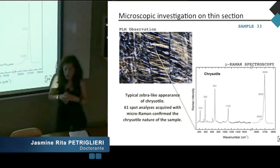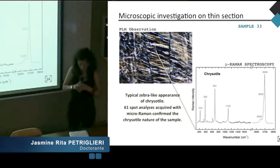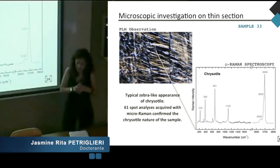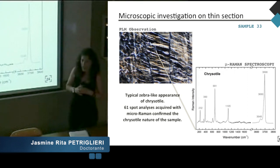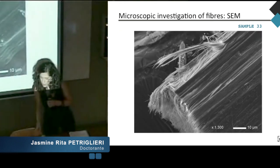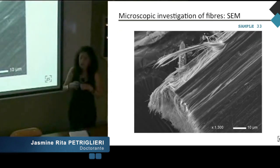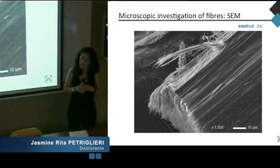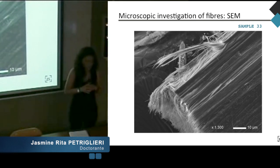PLM images show the typical zebra-like appearance of massive chrysotile. In addition, 60-spot analyses acquired with micro-Raman confirmed that the sample is homogeneous, and we observed the typical Raman spectra of chrysotile. For this reason, we decided to further investigate the morphological nature of these samples, and SEM images demonstrate the fibrous morphology.